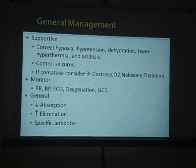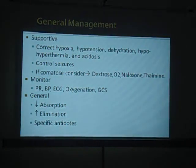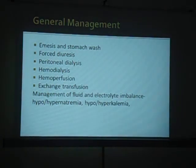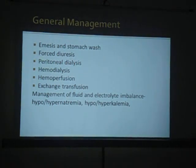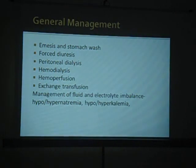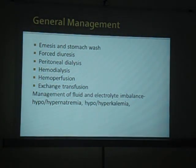Then there is increasing elimination, and the next measure is giving a specific antidote if one is available. Forced alkaline diuresis is tried in cases of barbiturate poisoning, since barbiturates are acidic substances - examples include phenobarbitone, pentobarbitone, and thiopental sodium. Peritoneal dialysis can also be tried. Hemodialysis can be tried in barbiturate poisoning. Hemoperfusion and exchange transfusion can be used in most poisonings where antidotes are not available.